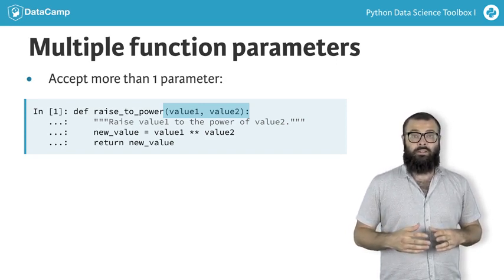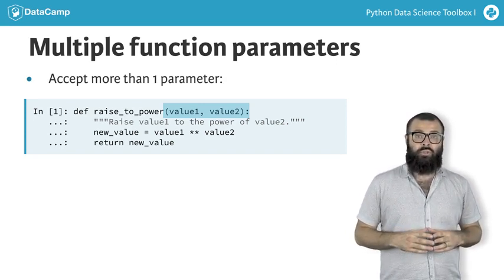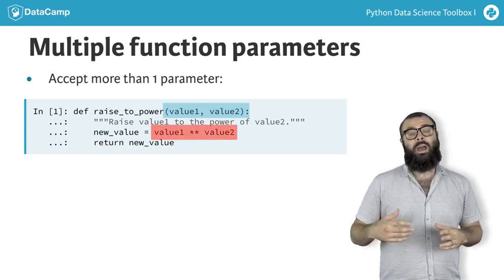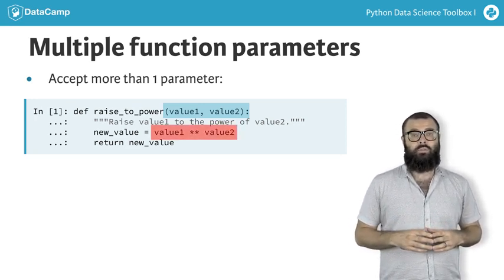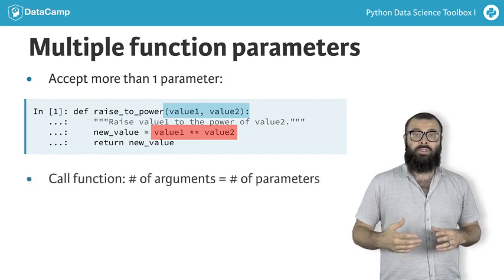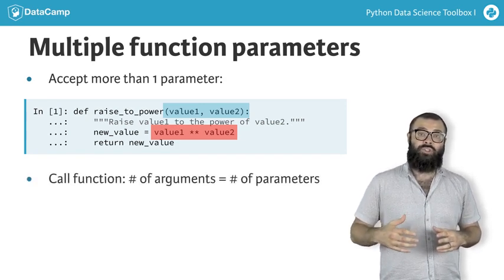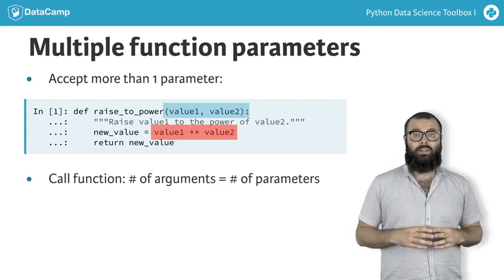In the lines after that, the behavior of the overall function was also changed by raising value one to the power of value two. You can call the function by passing in two arguments because the function has two parameters, as declared in the function header.